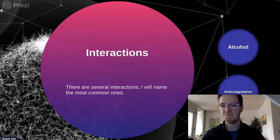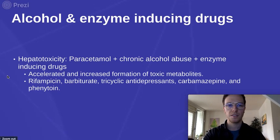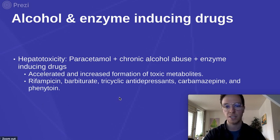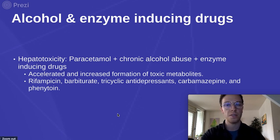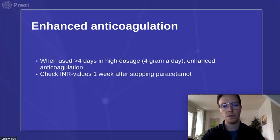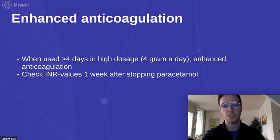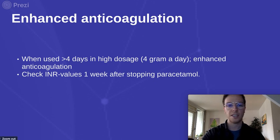Interactions: the most common ones to note. First, combining alcohol, paracetamol, and enzyme-inducing drugs — such as rifampicin, barbiturates, or tricyclic antidepressants — may more easily cause liver damage. This is due to accelerated and increased formation of toxic metabolites. So if prescribing any of these drugs in combination with paracetamol, always ask about alcohol consumption and act accordingly. Additionally, long-term use of more than 4 days at high dosage of at least 4 grams a day may lead to enhanced anticoagulation. Always check INR values one week after stopping paracetamol in patients where this is necessary.